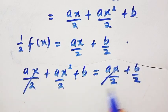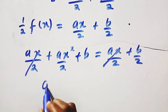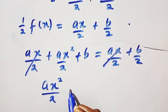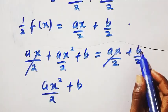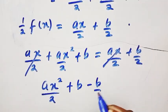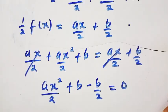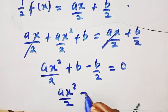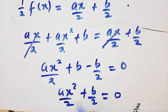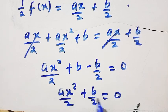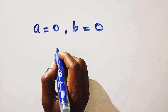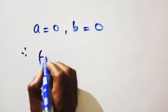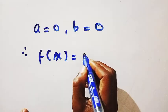The ax over 2 terms cancel on both sides, leaving ax squared over 2 plus b minus b over 2 equals 0, which gives ax squared over 2 plus b over 2 equals 0. This shows that a equals 0 and b equals 0, since all terms must equal zero. Therefore, our f of x equals 0.